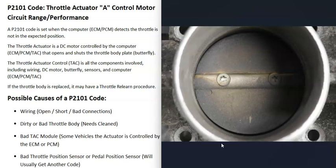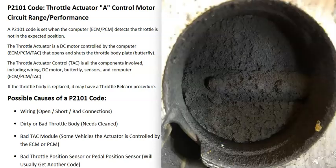Another possible cause is a dirty or bad throttle body. There might be an issue with the throttle body that's not allowing the little DC motor to work correctly. A very common problem with these throttle bodies is that they get really super dirty, which can throw off the sensors, the computer, and different things. If you look inside the throttle body and it looks really dirty, it's a good idea to clean it up.